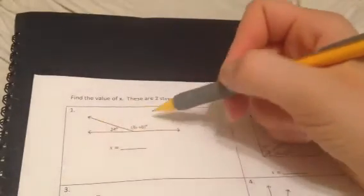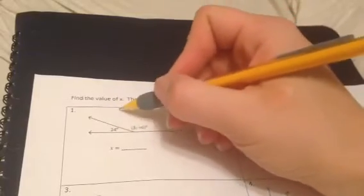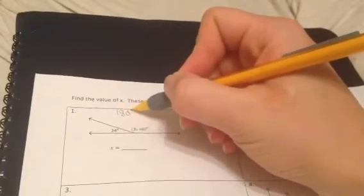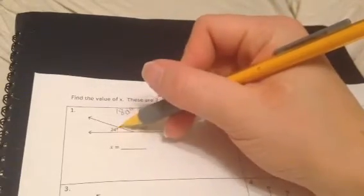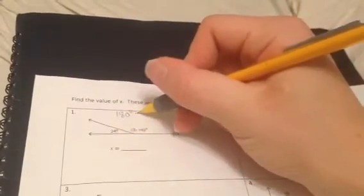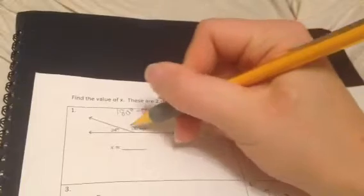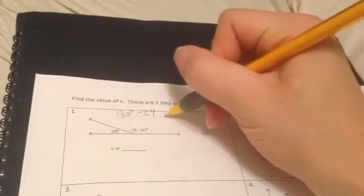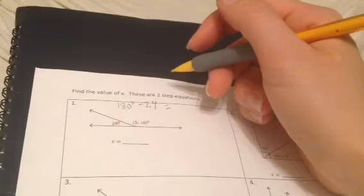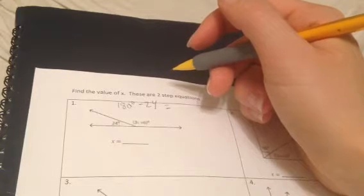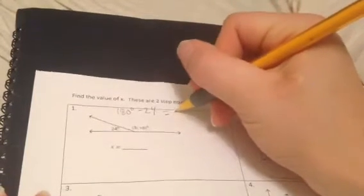So we have a supplementary angle, or a set of supplementary angles, so that means they're going to equal 180 degrees. Well then, we know the one angle is 24, so we're going to subtract out 24 to figure out what this needs to be left over. So if you do 180 minus 24, let me double check my math, we get 156.